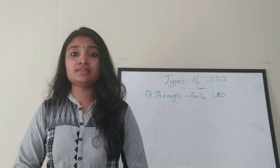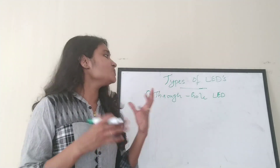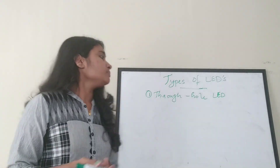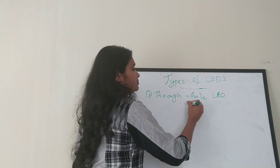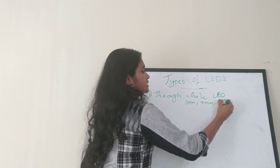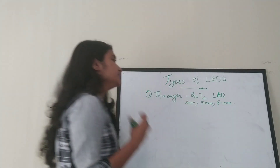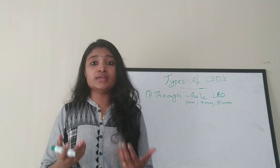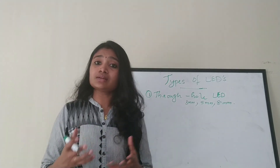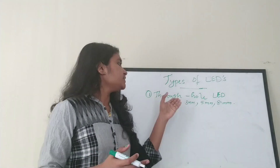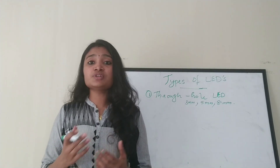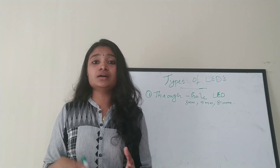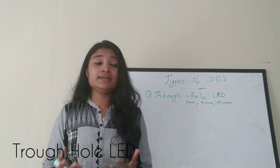Now let's discuss the various types of LEDs. The first one is the through-hole LED. It is available in various shapes and sizes, but the general diameters are 3 mm, 5 mm, and 8 mm. Colors available include red, green, blue, yellow, white, etc. I have included an image of a through-hole LED — please watch the image to identify how it looks.